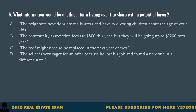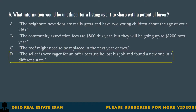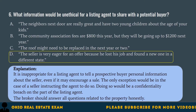Question 6. What information would be unethical for a listing agent to share with a potential buyer? A. The neighbors next door are really great and have two young children about the age of your kids. B. The community association fees are $800 this year, but will be going up to $1,200 next year. C. The roof might need to be replaced in the next year or two. D. The seller is very eager for an offer because he lost his job and found a new one in a different state. The correct answer is D. It is inappropriate for a listing agent to tell a prospective buyer personal information about the seller, even if it may encourage a sale. The only exception would be if the seller instructs the agent to do so. Doing so would be a confidentiality breach on the part of the listing agent.